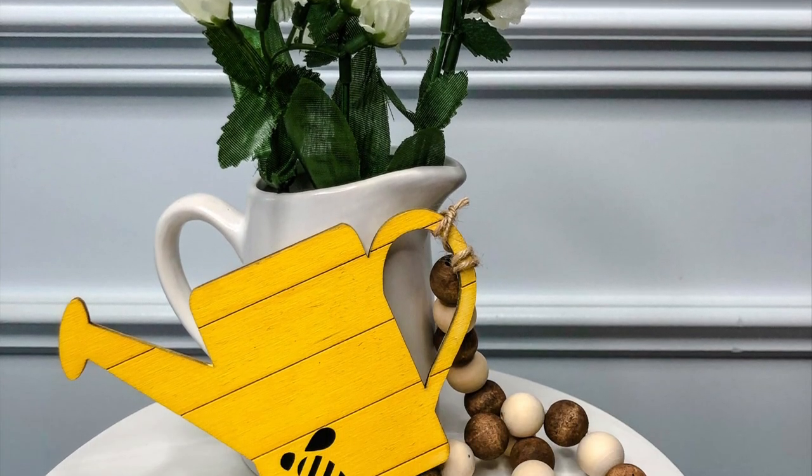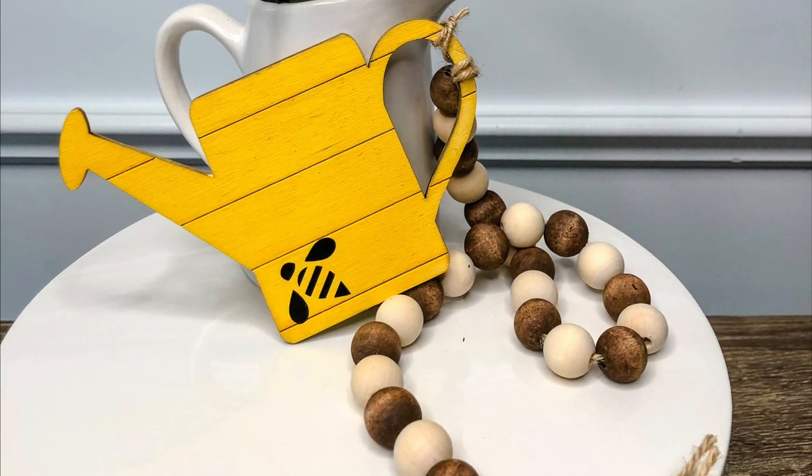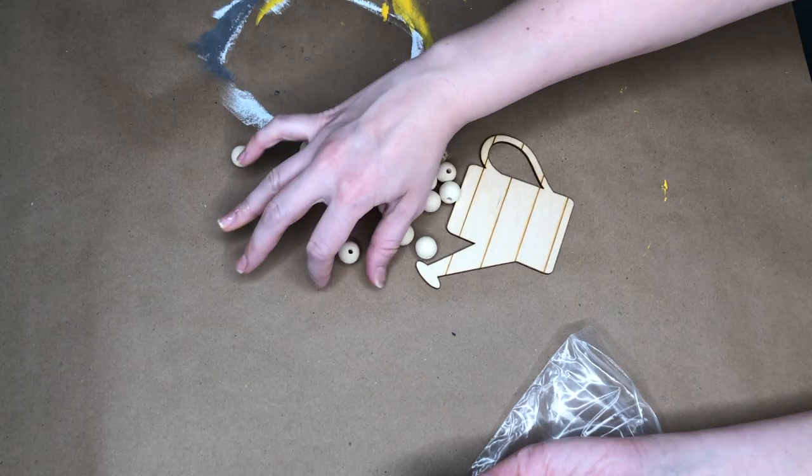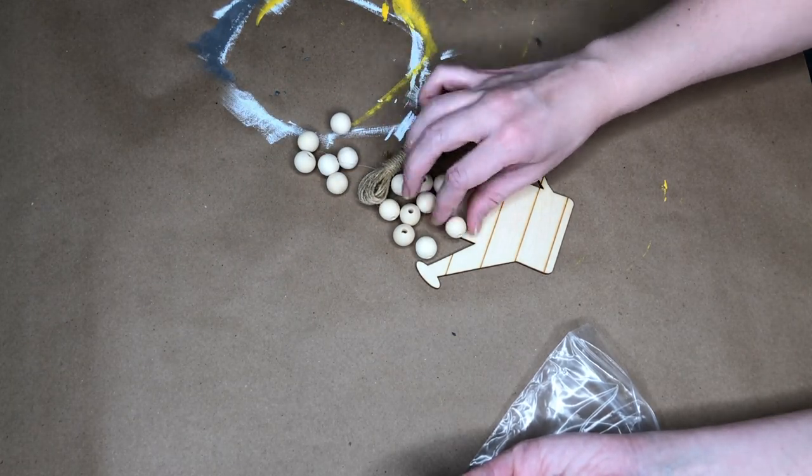Next is a watering can DIY with a subtle bee hint that I think would look perfect on any tiered tray.